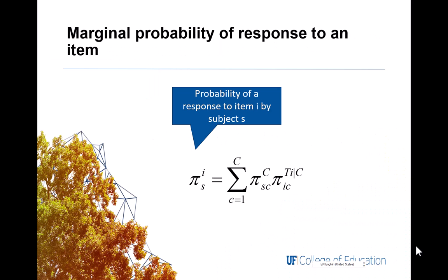which is just the sum of the probability for the response pattern of each class. And then you have a marginal probability of a response to an item, this is the item level model, so it is the sum across classes of the product of the class prevalence probability and the conditional probability of responding to that item for a class.